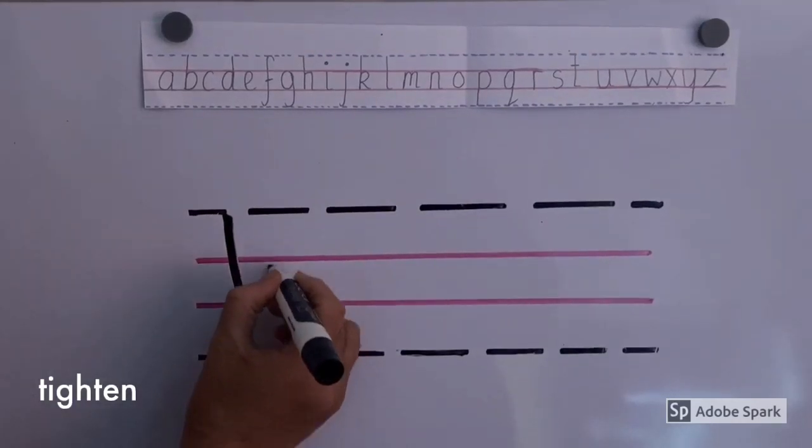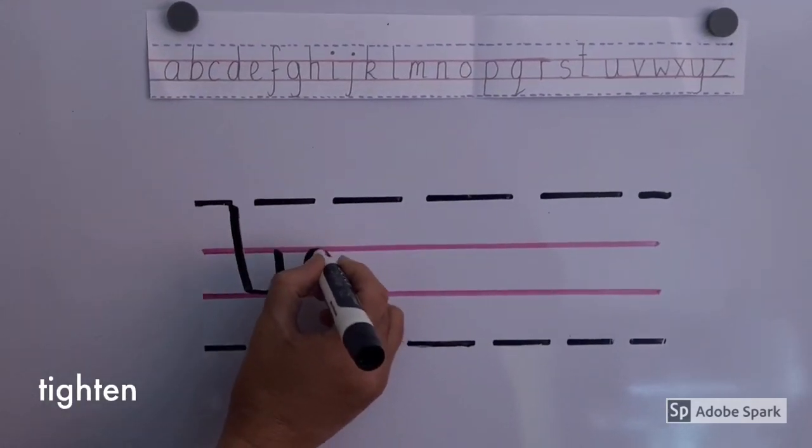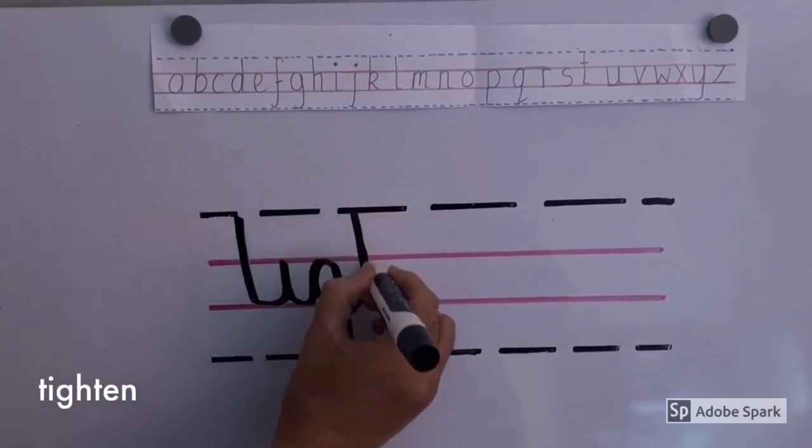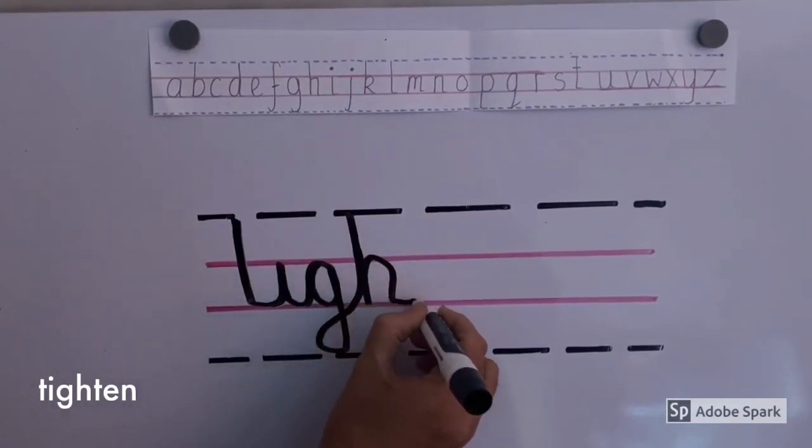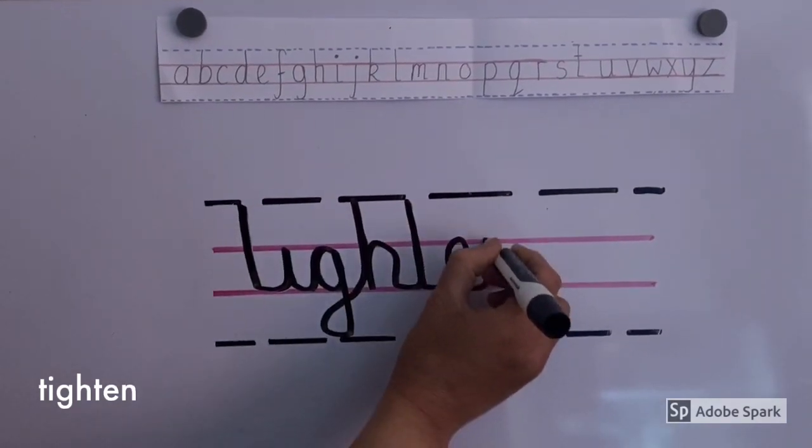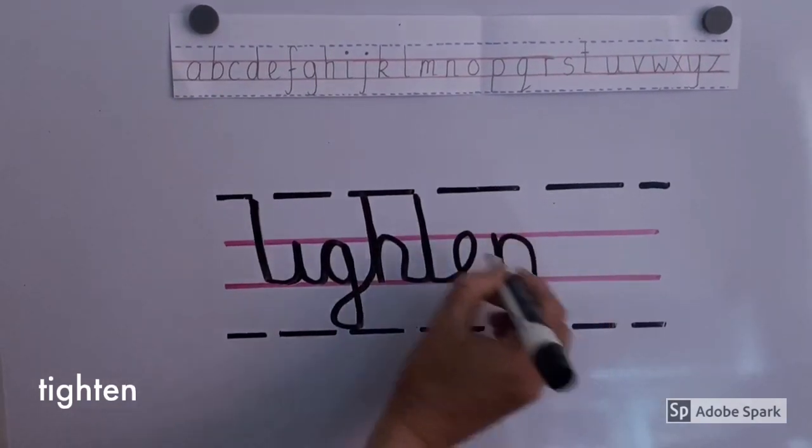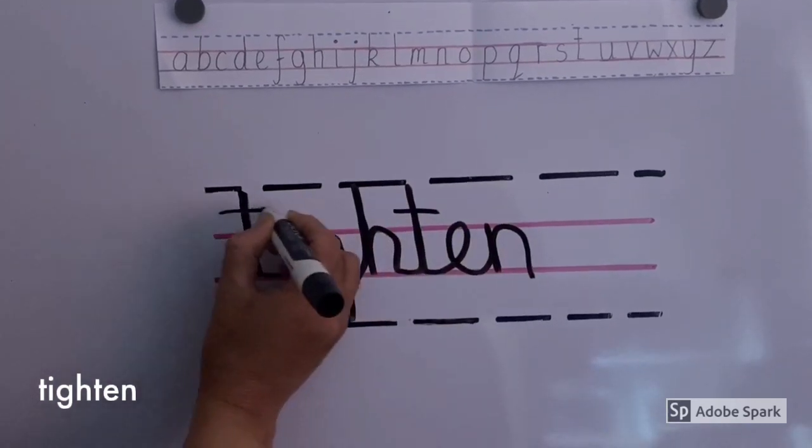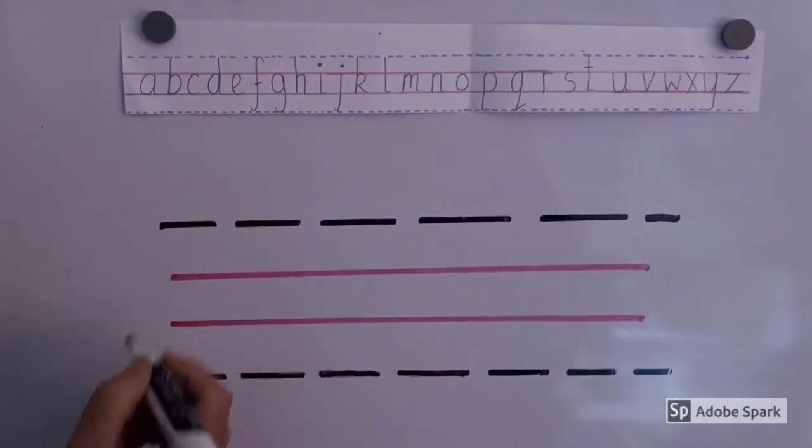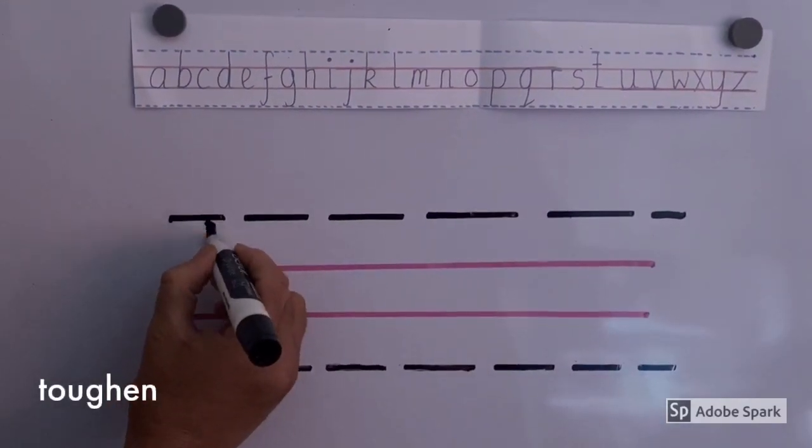Tighten. T, I, G, H, T, E, N. Tighten. Tighten means to make or become tight or tighter. Tighten.